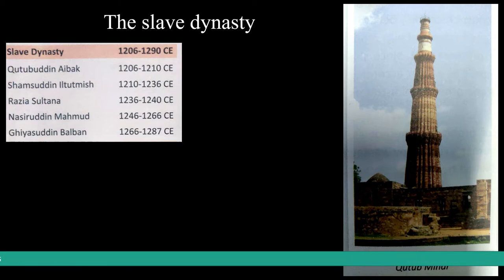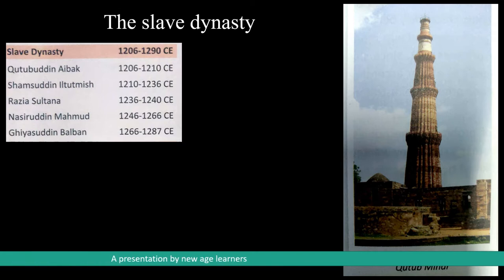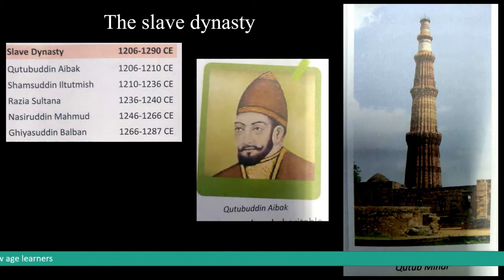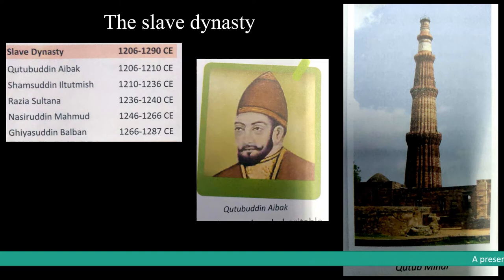Coming to the slave dynasty: the rulers of this dynasty were Mamluk Sultans. Mamluk in Arabic means 'owned.' The early sultans of this dynasty were actually slaves, but later came to powerful positions. Qutubuddin Aibak, who reigned from 1206 to 1210 CE, was the founder of the slave dynasty, also called the Mamluk dynasty. He ruled for just four years. He was Muhammad Ghori's slave and a capable general. Qutubuddin established his control over Delhi after Muhammad Ghori's death. This new kingdom is described in history as the first dynasty of the Delhi Sultanate.